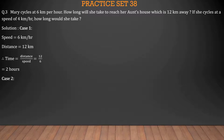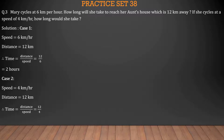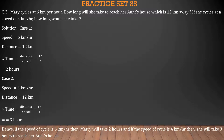Case 2: Speed = 4 km/hr, Distance = 12 km (same distance). Time = distance/speed = 12/4 = 3 hours. Hence, if the speed is 6 km/hr, Mary will take 2 hours, and if the speed is 4 km/hr, she will take 3 hours to reach her aunt's house.